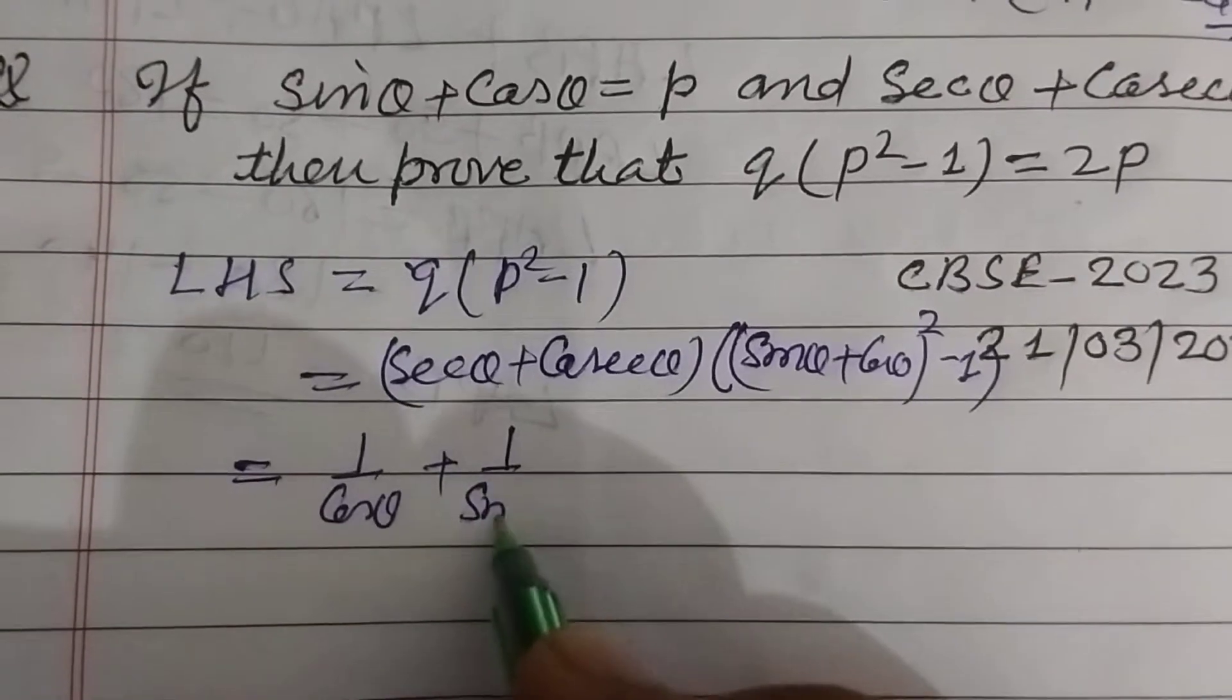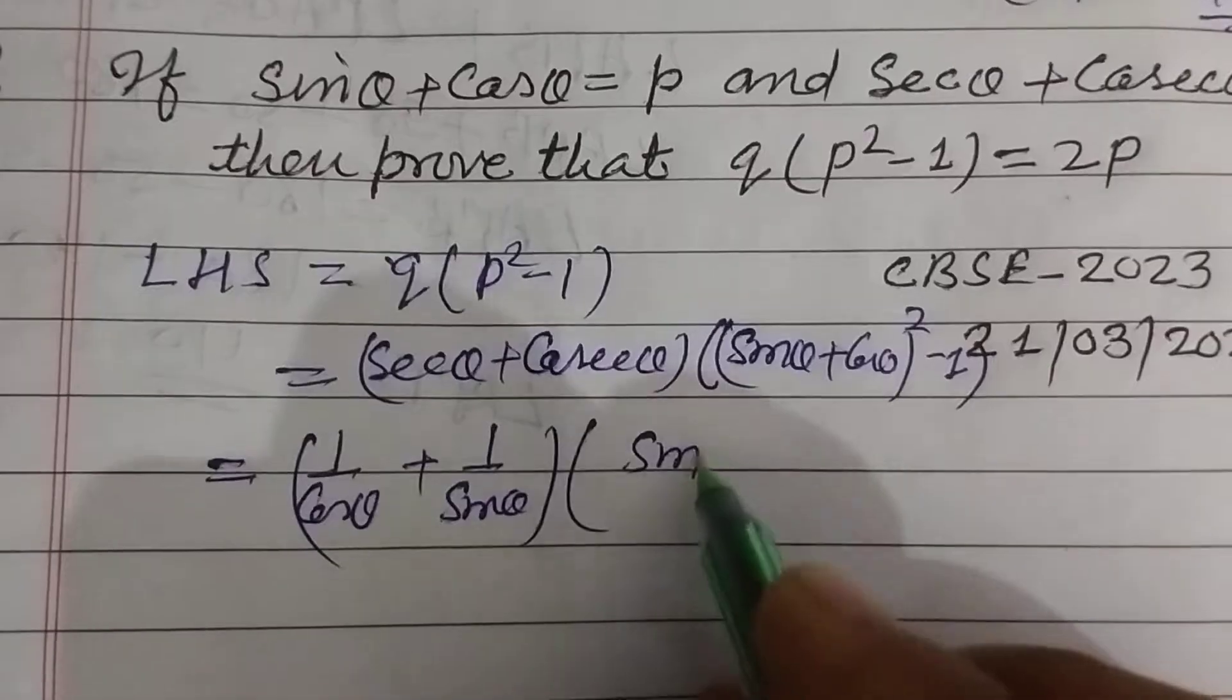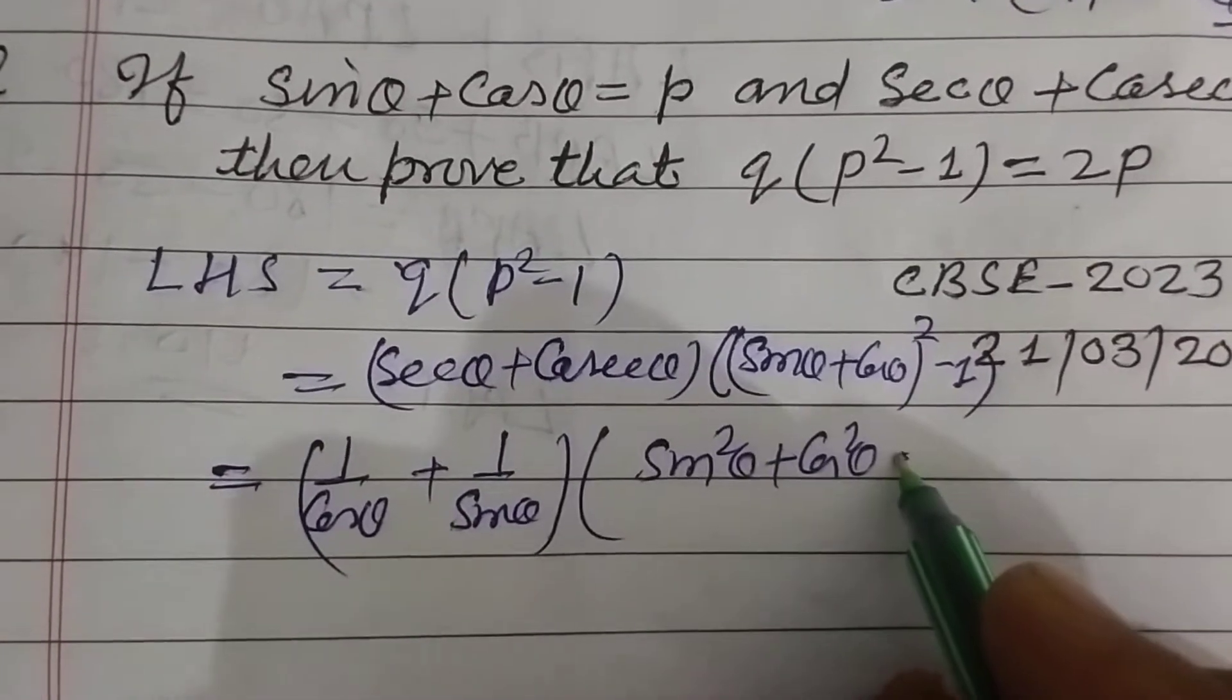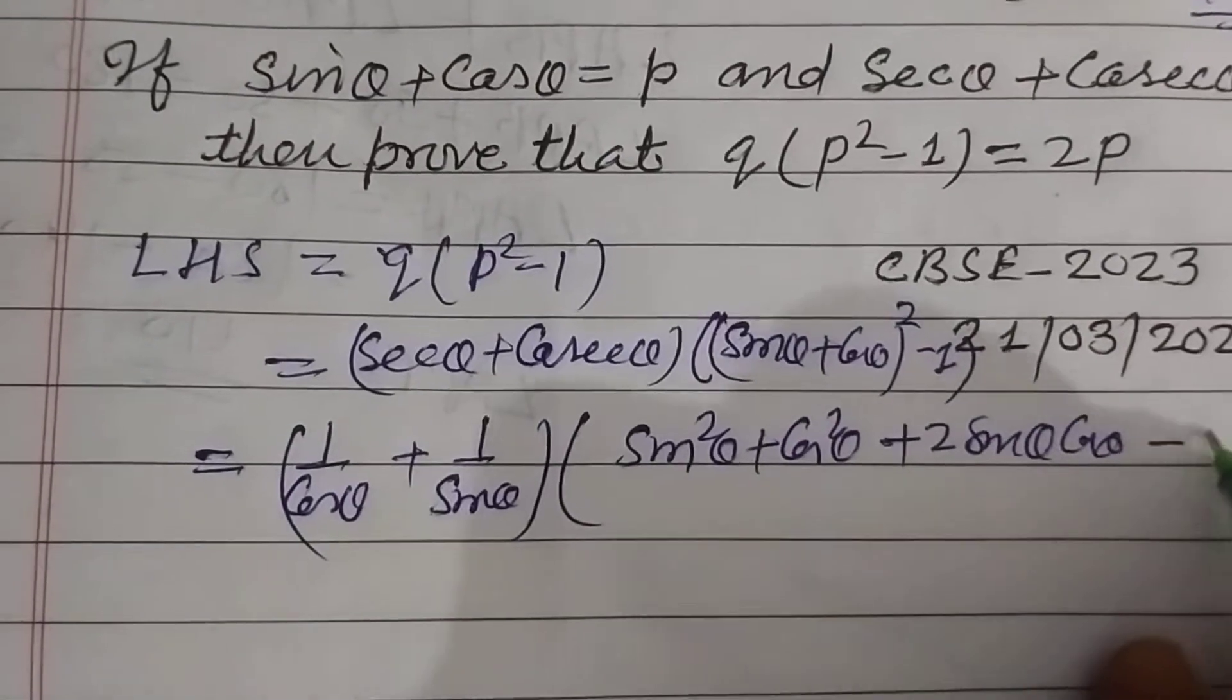And this is sin² θ plus cos² θ plus 2 sin θ cos θ minus 1. So this will be sin θ plus cos θ over sin θ into cos θ.